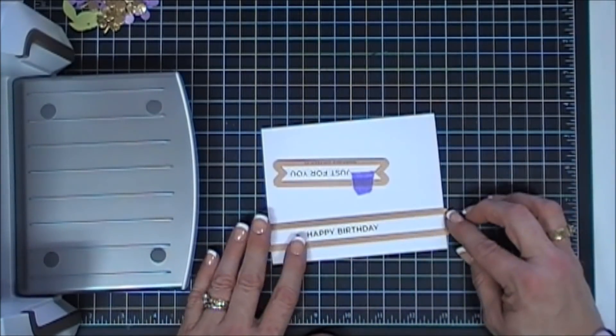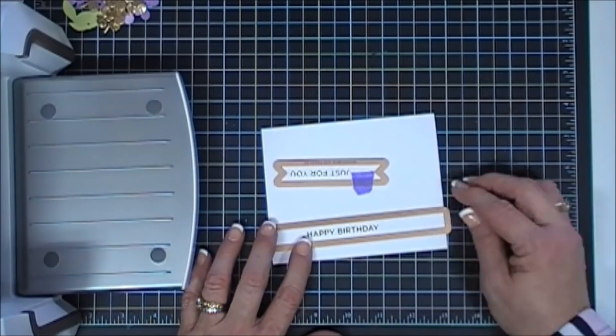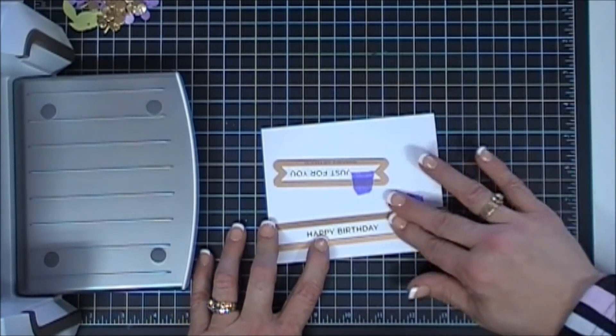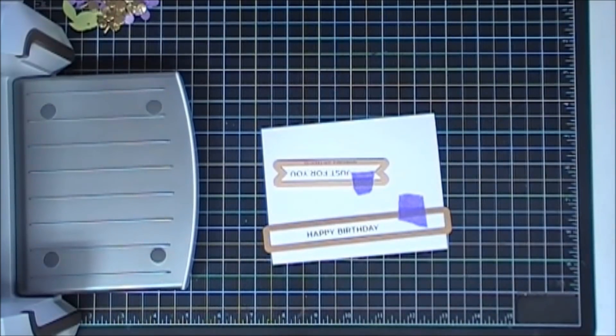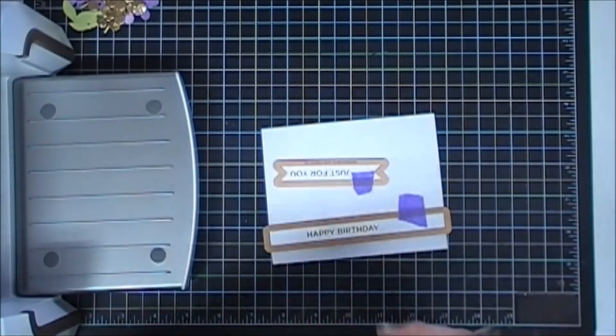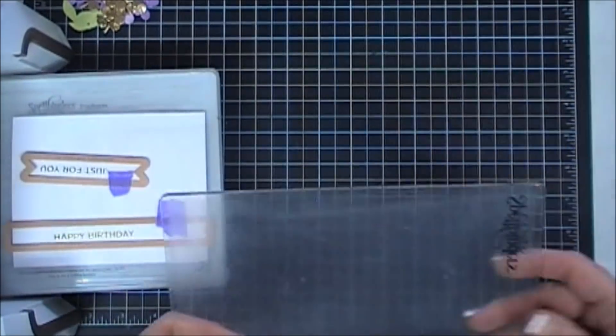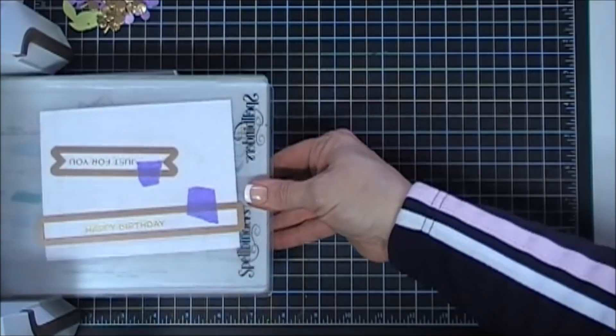I'll do the same thing with my happy birthday. I want my happy birthday to be a little bit more towards the left. This is going to fit the entire panel length, which is great. Now we'll just run this through the Platinum 6. I'll grab my plate here and they die cut beautifully.